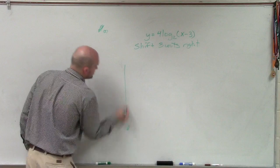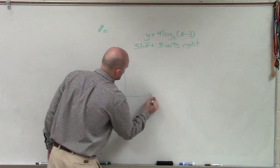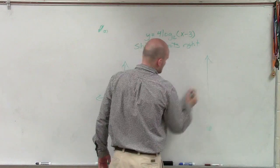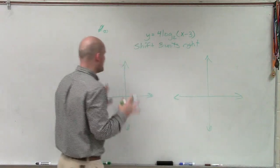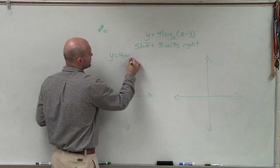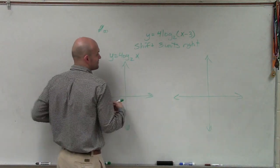So to graph this, what I'm going to do is I'm going to want to graph the parent function with no transformation. And then I'm going to want to graph the function with transformations. So to graph the parent function without transformations, I'm going to have y equals 4 log base 2 of x.